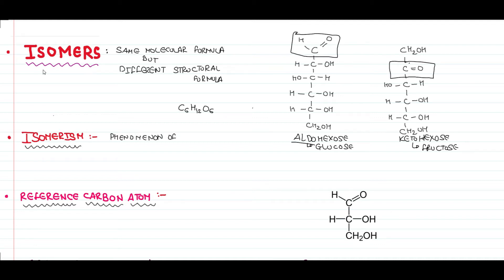The phenomenon of exhibiting isomers is known as isomerism. As seen in the previous example, we have the hexose sugar in both the aldehyde form and the ketone form of the same compound. So we can say that the hexose molecule has two isomers: one in aldehyde form and the other in ketonic form.